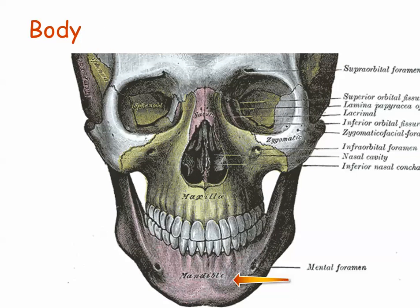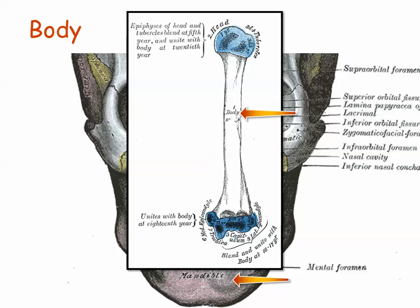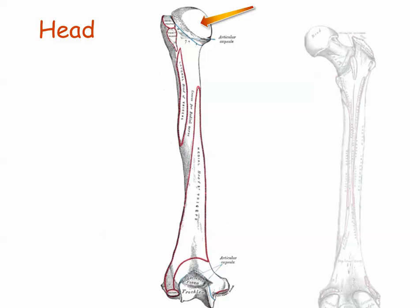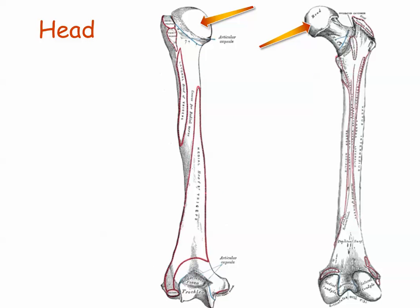The main or central portion of a bone is called the body of the bone, as in the main part of the lower jawbone, the mandible, identified here. In a long bone, the shaft portion is also called the body of the bone. The head of a bone is a distinct epiphysis, or end piece, on a long bone, separated from the shaft by a narrowed portion, or neck.